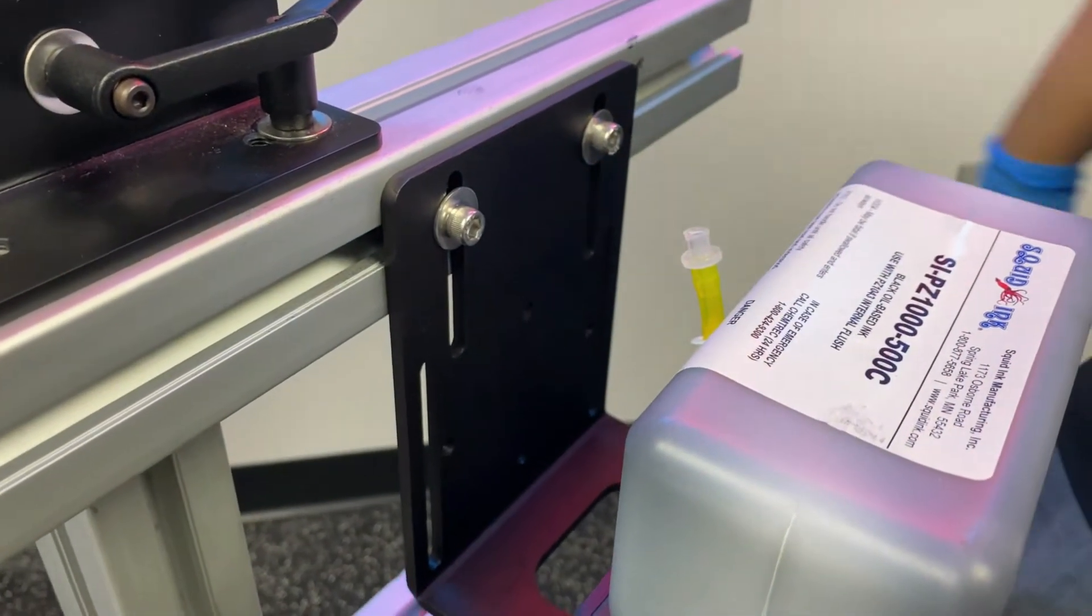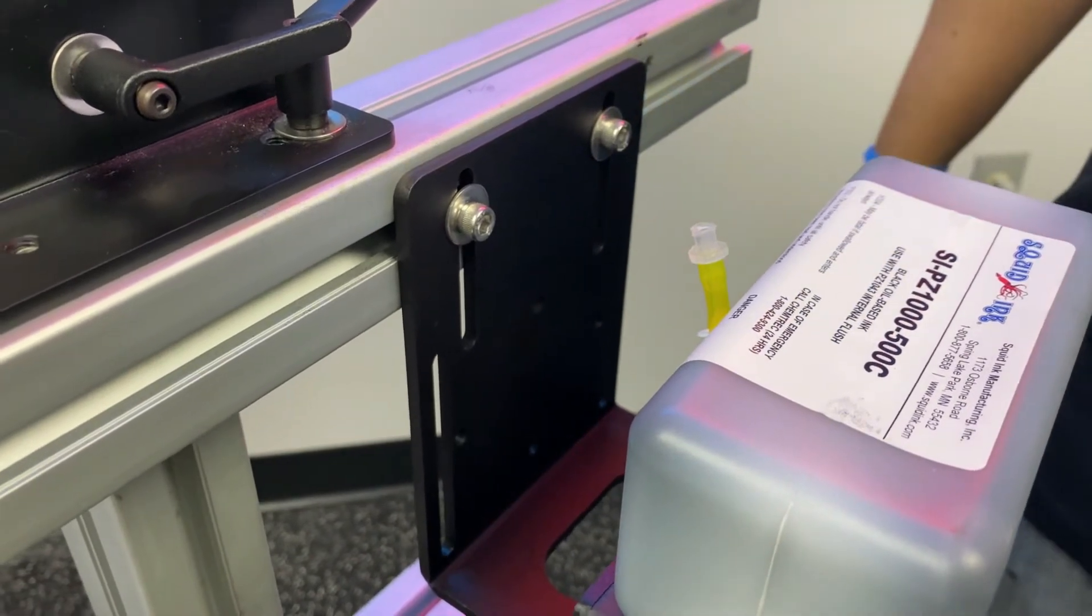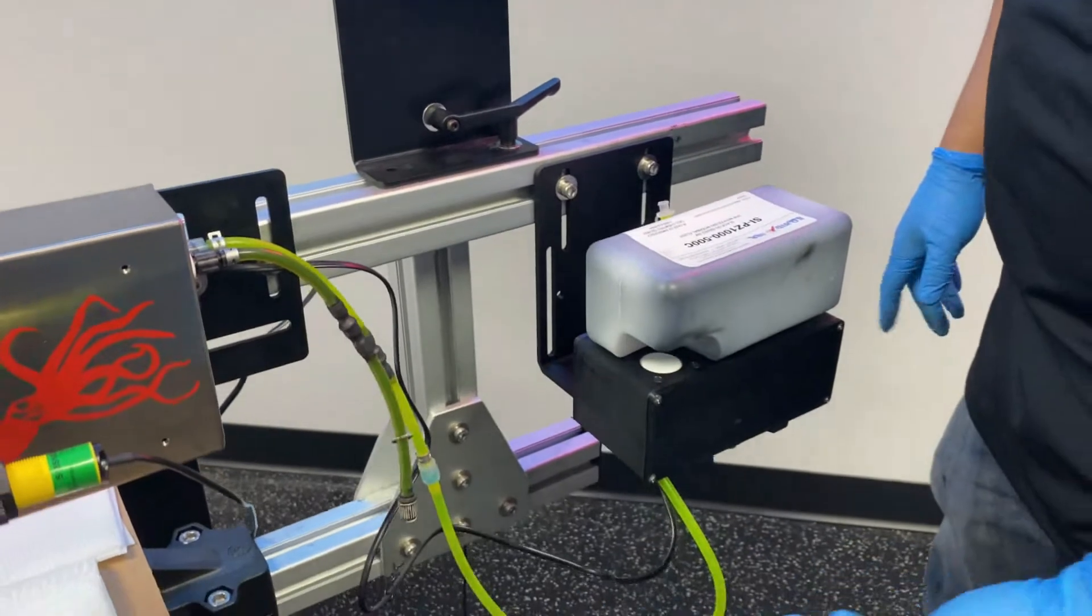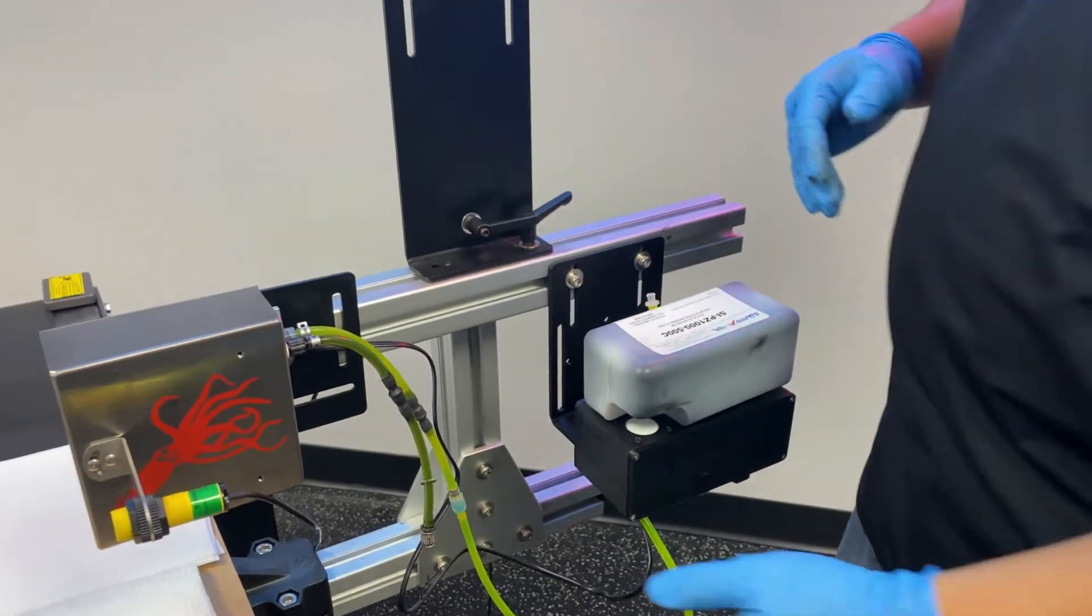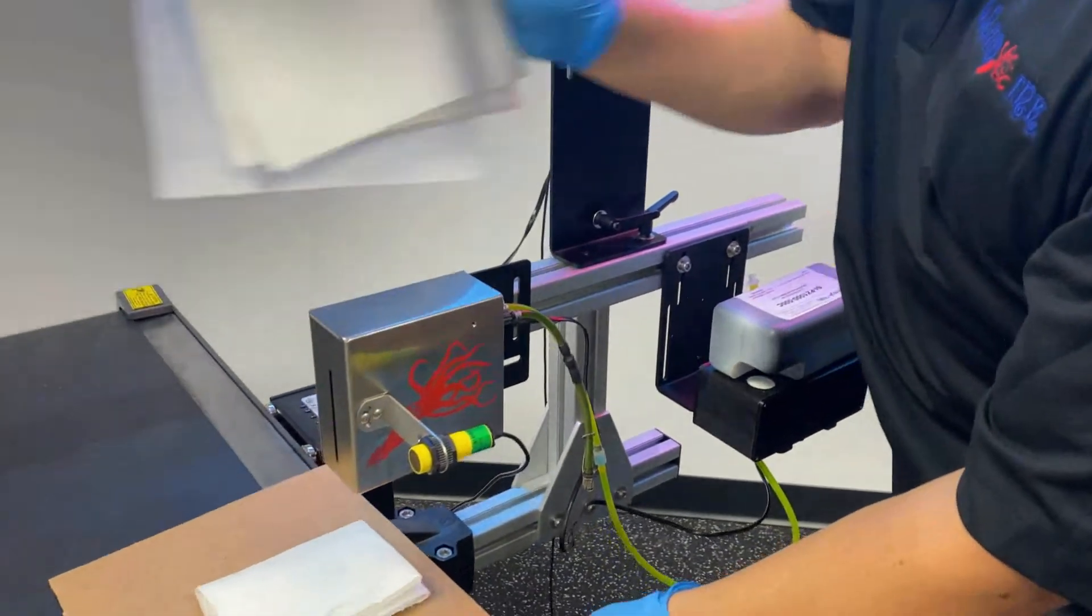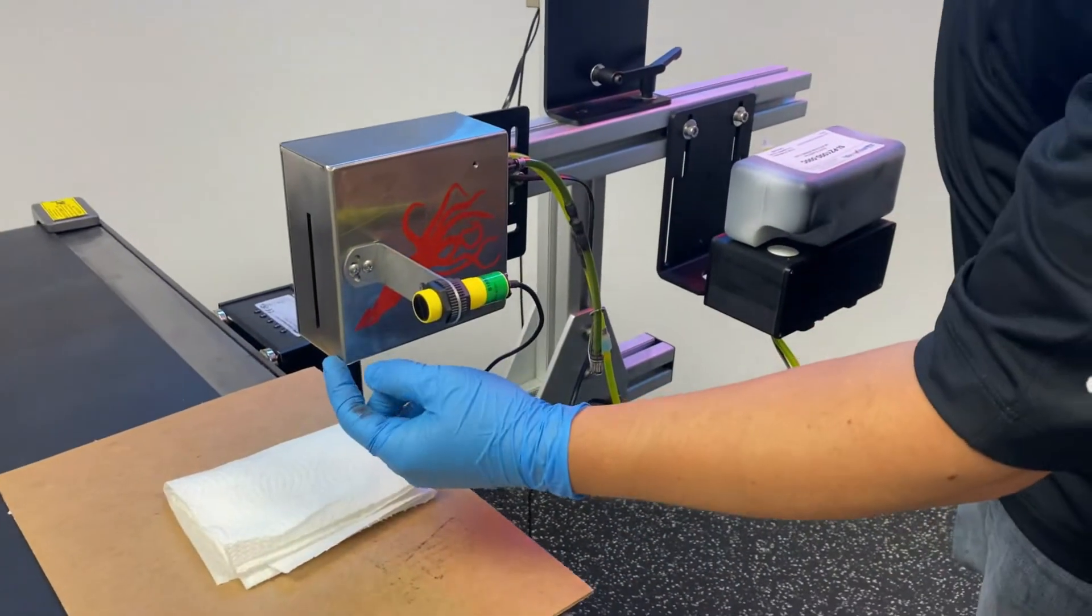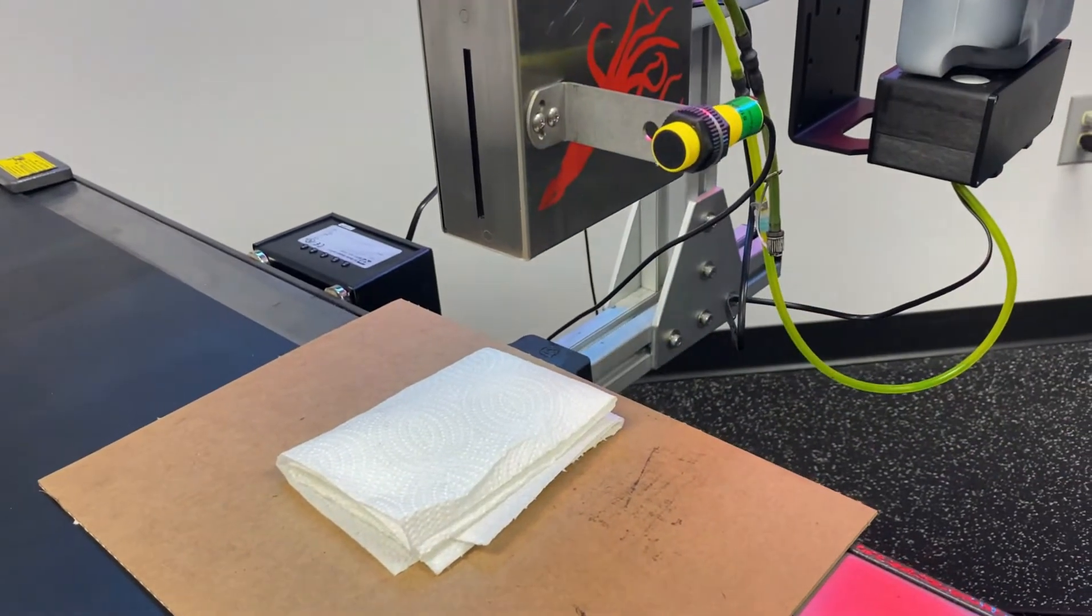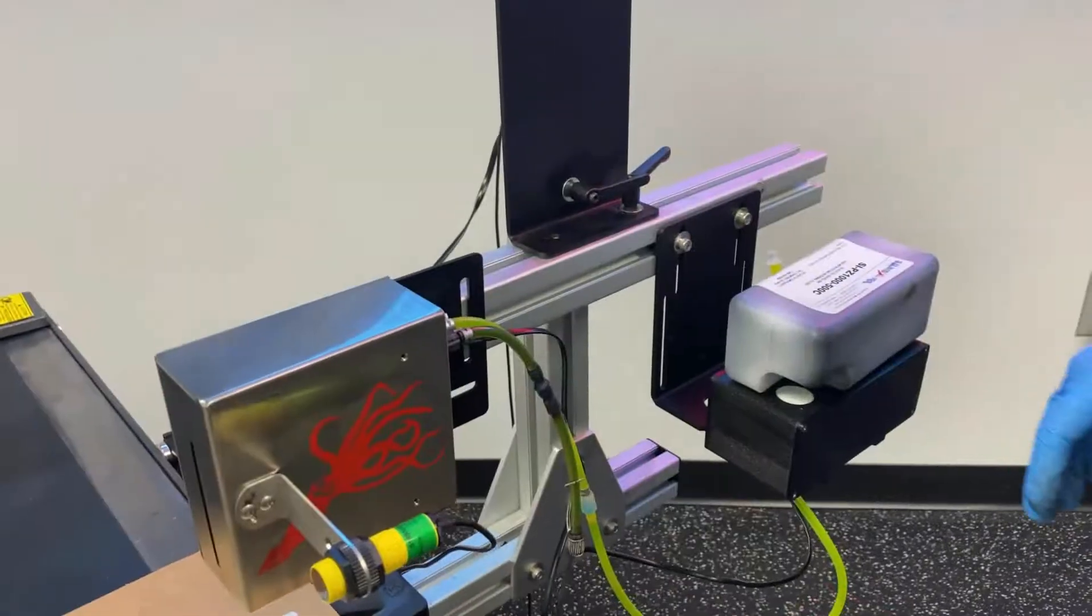Once we have our ink line hooked up or ready to prime, what I like to do is make sure we have something under the printhead to catch any fluid that may escape from the print engine while we're priming.